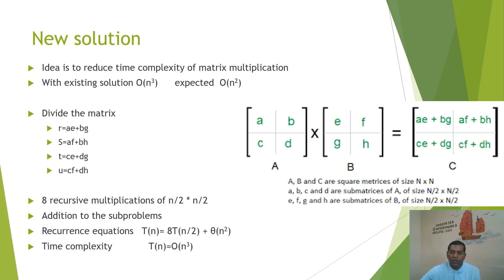How can we get this matrix? We have R, S, T, U as the resultant matrix where R = AE + BG, S = AF + BH, T = CE + DG, and U = CF + DH. Looking at the elements of this resultant matrix, we can see that products like AE, BG represent multiplications of elements, and these multiplications can be executed in a recursive format.